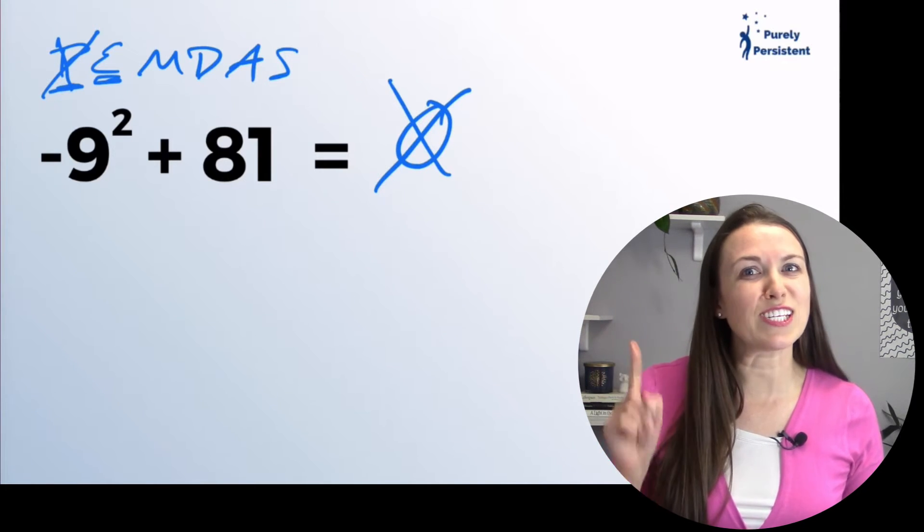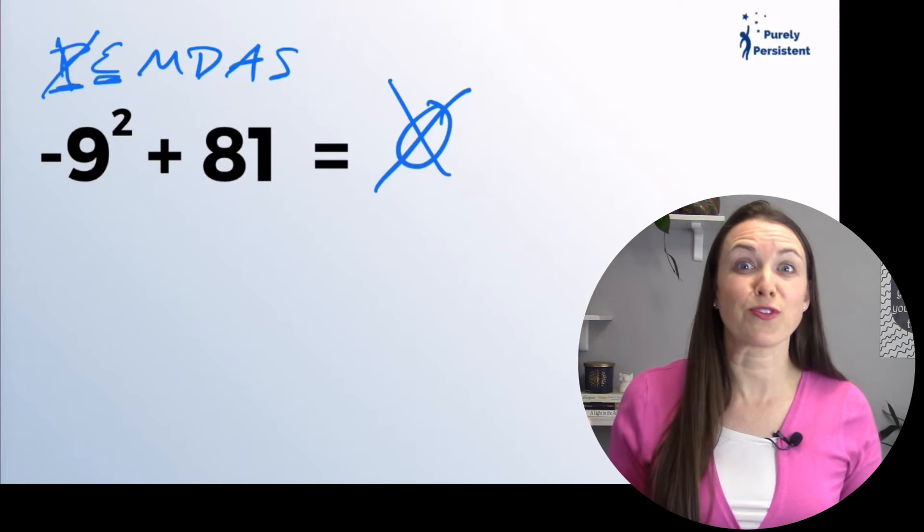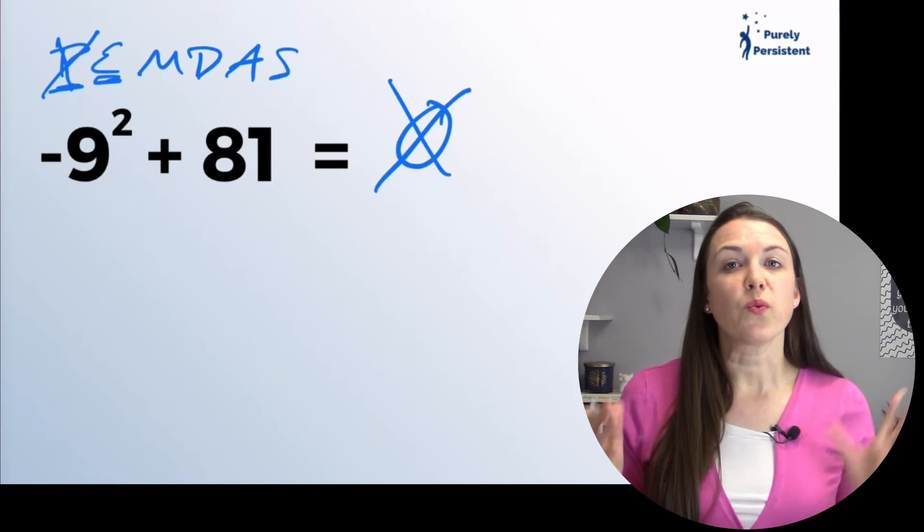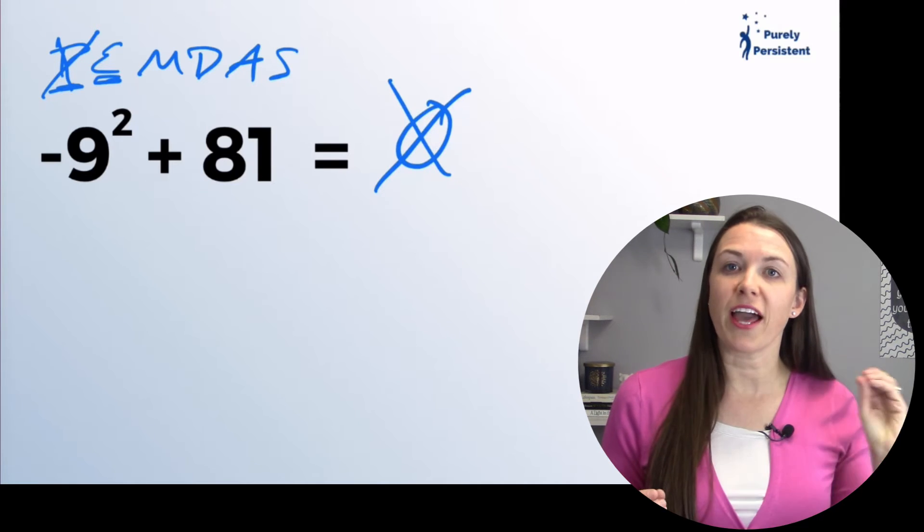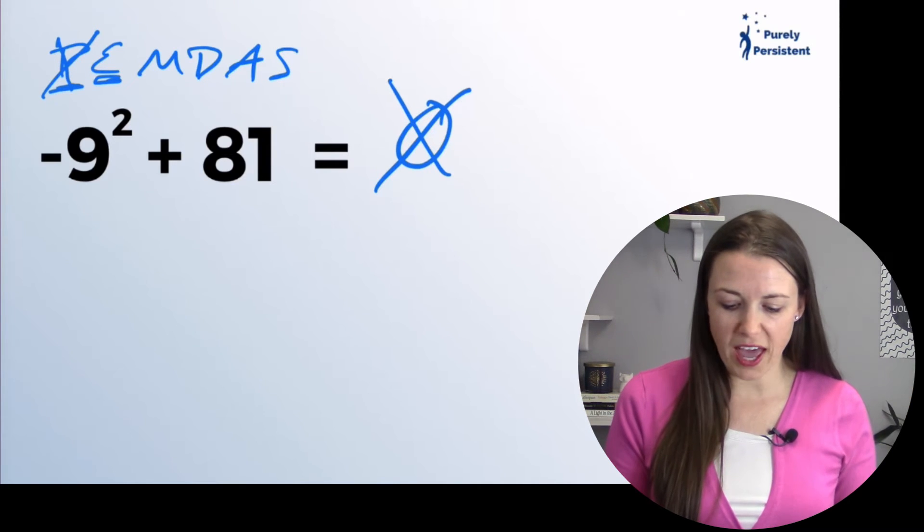This is where the mistake happens for a lot of people. When we have a number that is squared, we're just multiplying the number by itself. So here we have negative nine times negative nine.